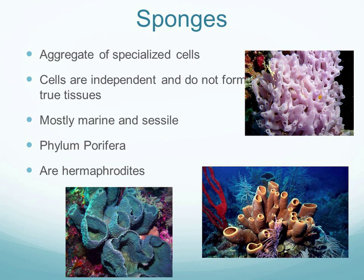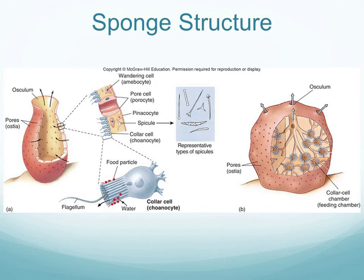Because the cells work independently, sponges do not have true tissues — true tissues require all cells working together for a single purpose. The majority of sponges are marine and all are sessile. You may find one or two freshwater species, but the vast majority are found in the ocean. Sponges come in all different shapes, sizes, and colors.